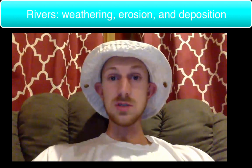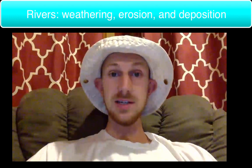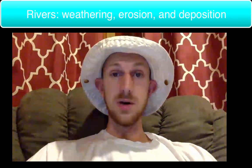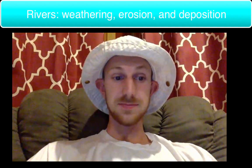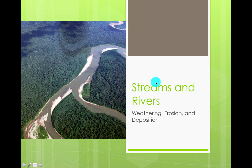So remember, the focus of this is actually the weathering, erosion, and deposition. But I want you to be able to take a look at what features are created and how they're created. So let's take a look here. We have a picture of the river right there. There's all sorts of different features that are made out of weathering and erosion and deposition processes on this river.